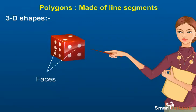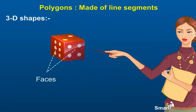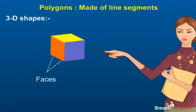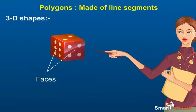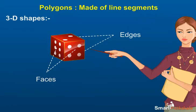3D shapes. Faces: each solid is made up of polygonal regions which are called its faces. Edges: when any two faces of the solid meet together, we get a line segment called an edge.